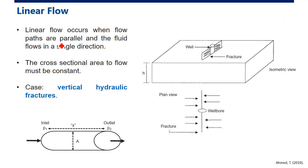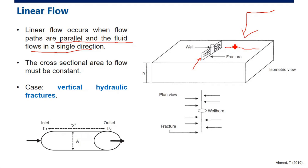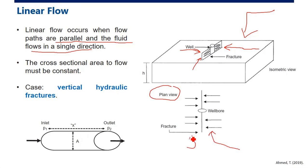Linear flow occurs when flow paths are parallel and fluid flows in a single direction. This occurs when we have a vertical fracture — the flow lines are straight, not radial. Looking from a plan view, the streamlines are straight, which is why we call it linear flow.